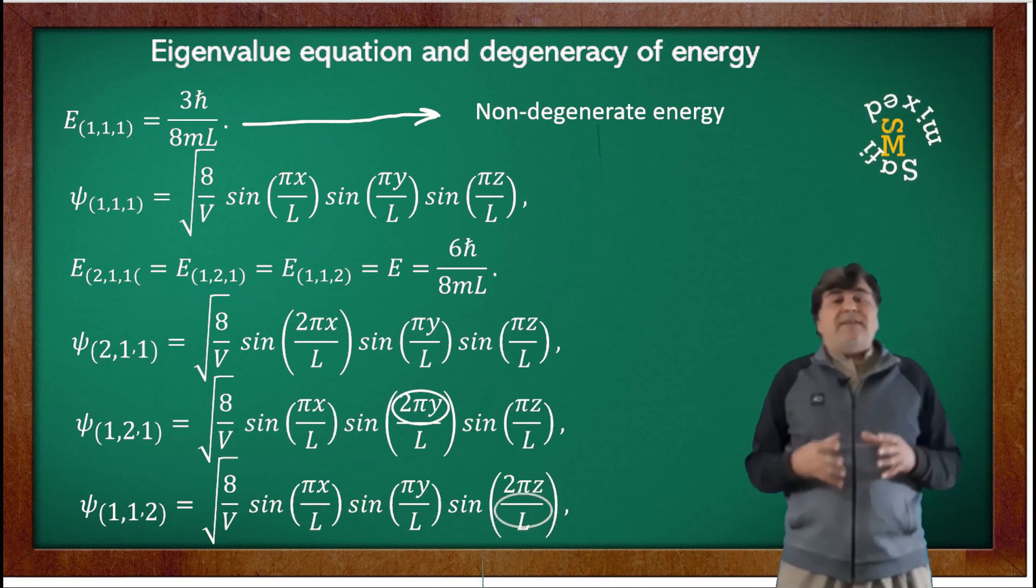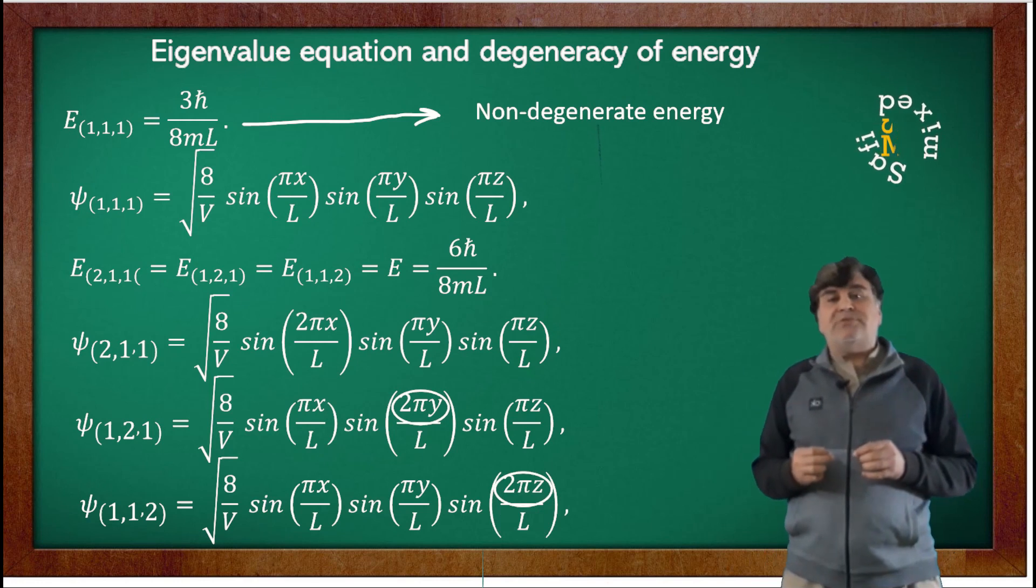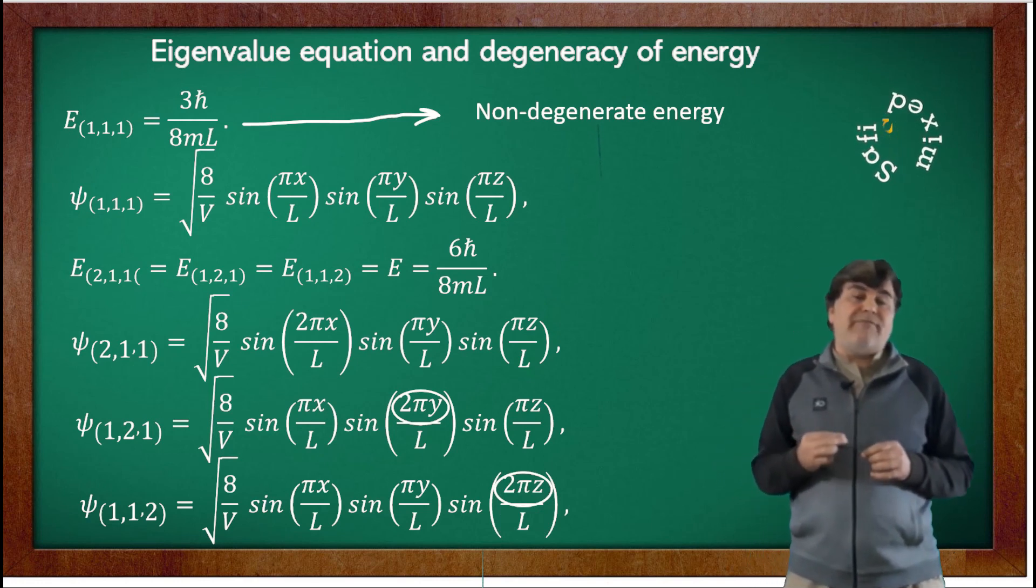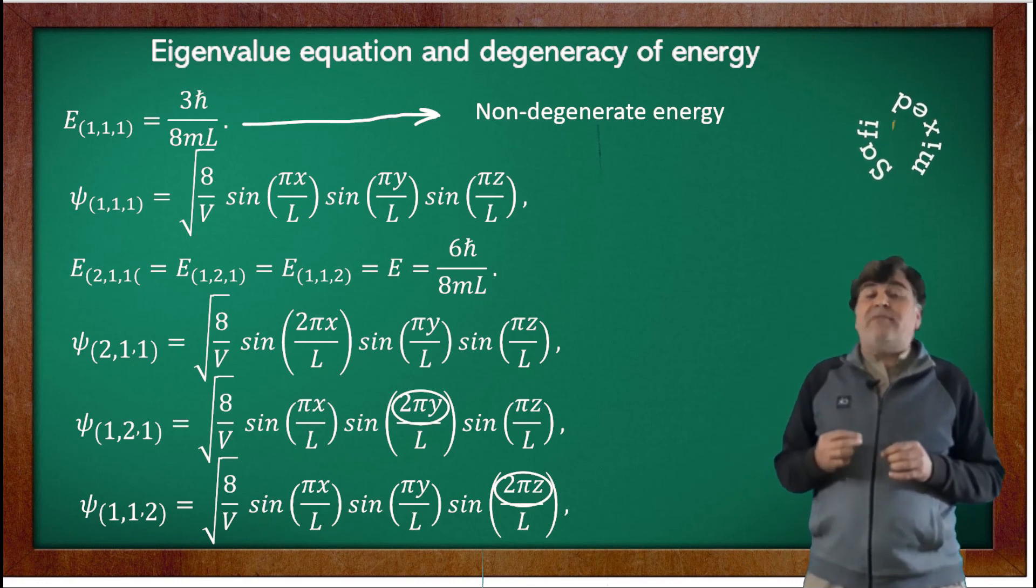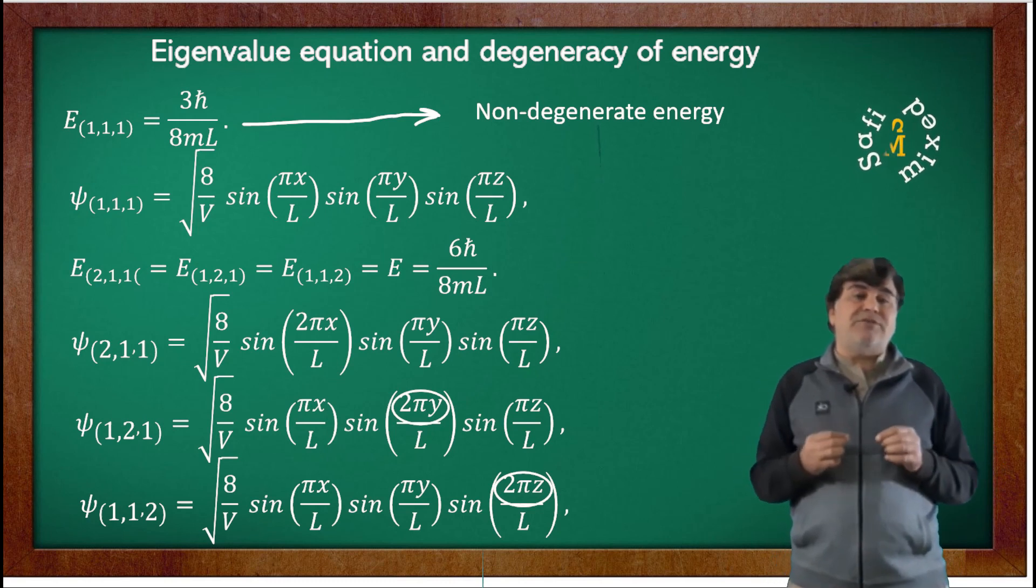So in this case, for three different sets of values of the three quantum numbers, we get a single value of energy, whereas for every set of values of the quantum numbers we have a different wave function.